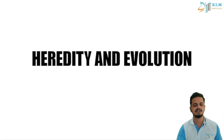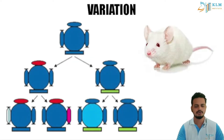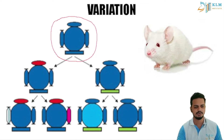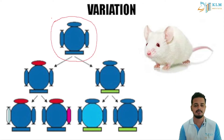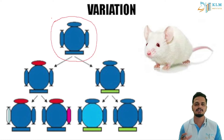Today we are going to look into heredity and evolution. Before knowing heredity and evolution, you should understand this set of diagrams. You already know about genes. Genes are a character or factor that decides how your nose is, how big it is, what is its shape, how big your eyes are, or how small your hands are.